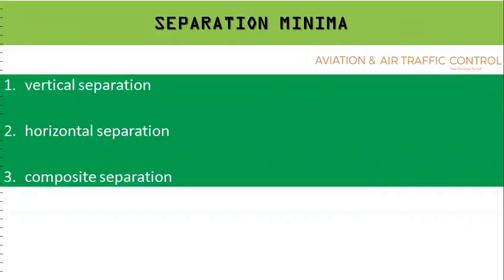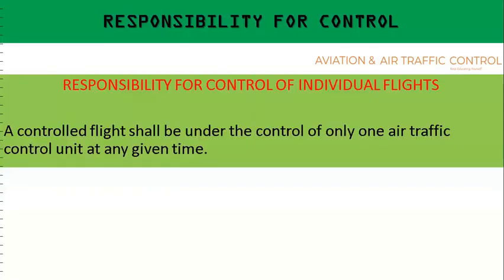There are three types of separation minima: vertical separation minima, horizontal separation minima, and composite separation minima. Composite separation minima is a mix of vertical and horizontal separation. There is a complete tutorial on separation minima available for reference. Responsibility for control of an individual flight rests with one air traffic control unit at any given time.